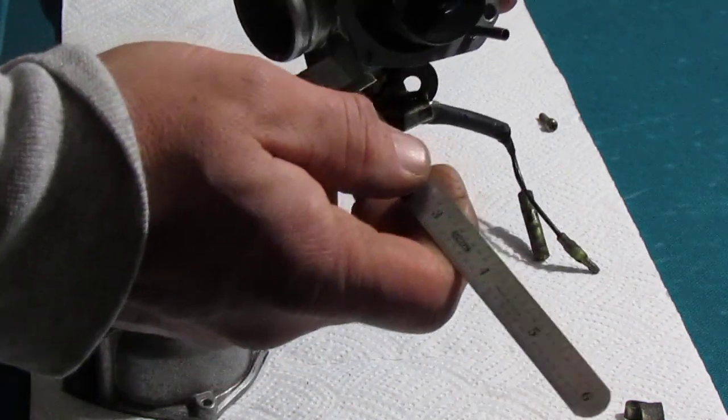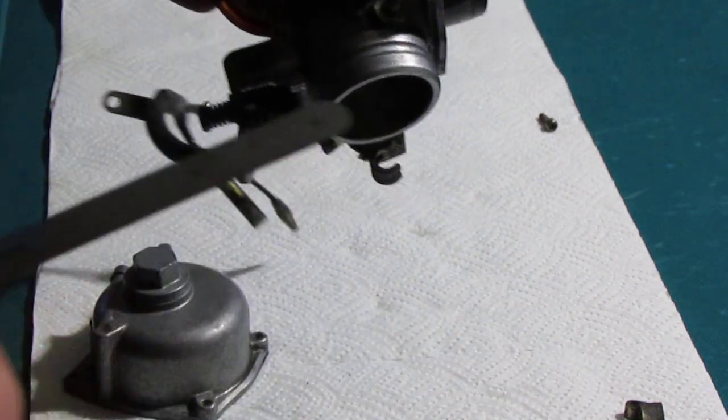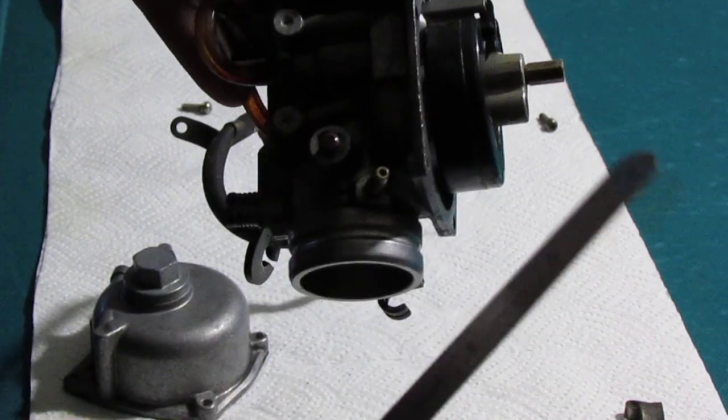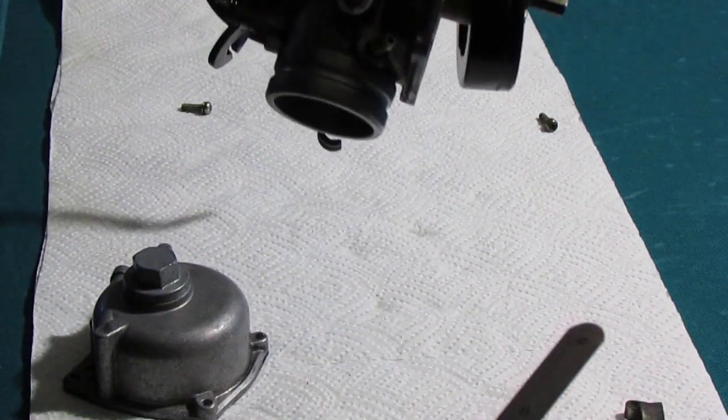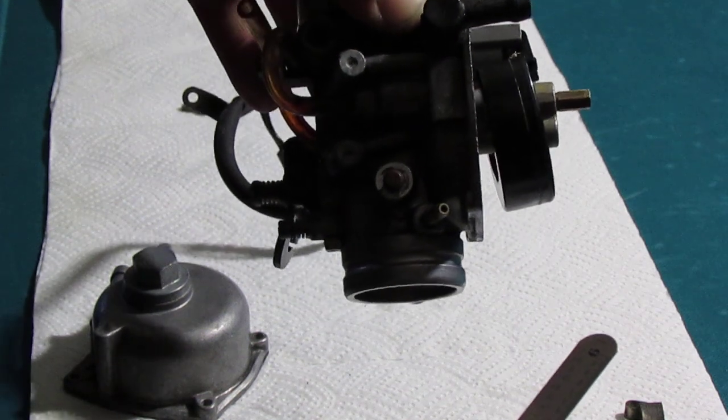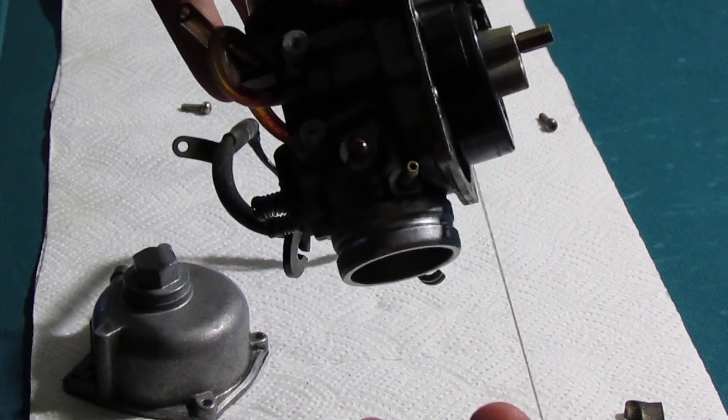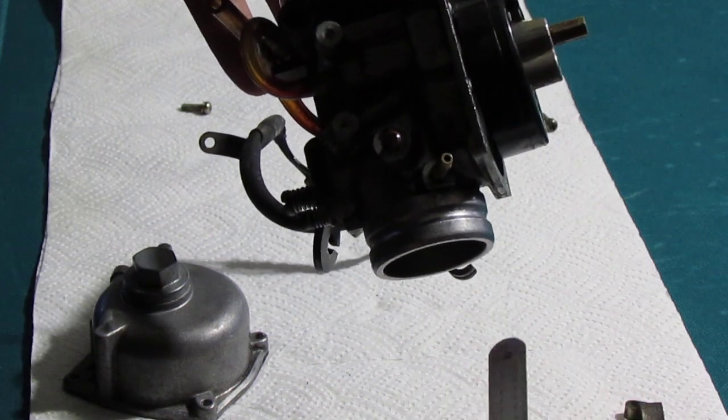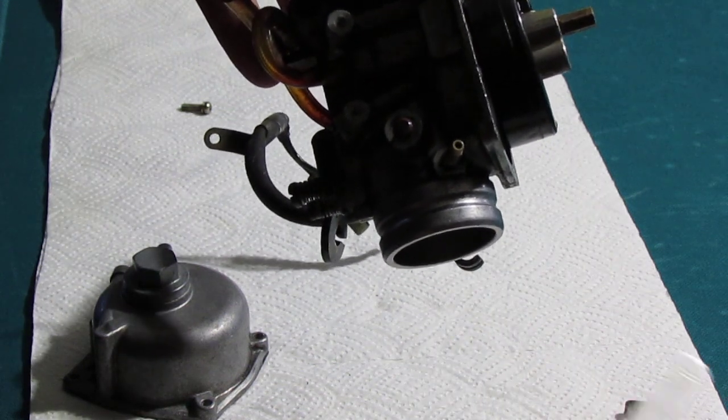So what I'm going to do first is show you the float level. Now what you're looking for is if you take the carburetor and let the float hang like this, and then you let it close, you're looking from here to the top of the float - 15 millimeters plus or minus 2 millimeters.